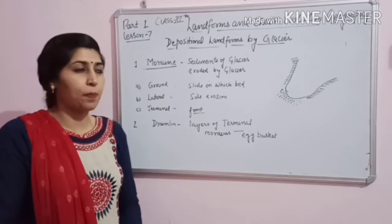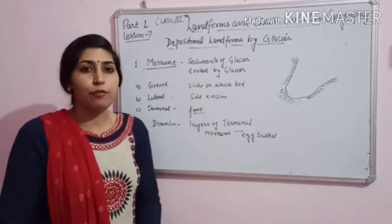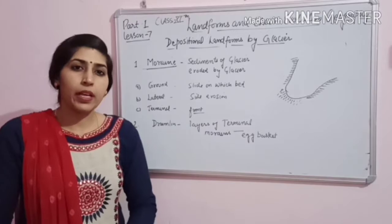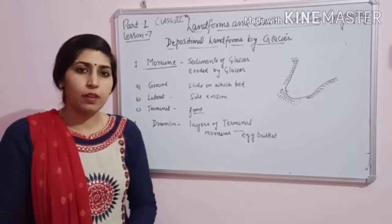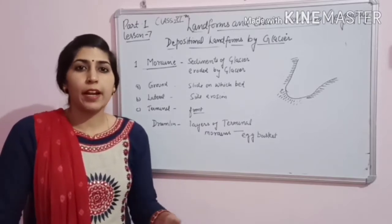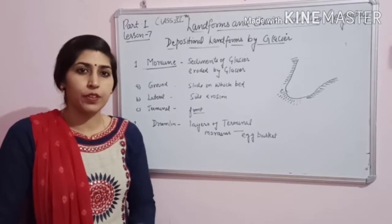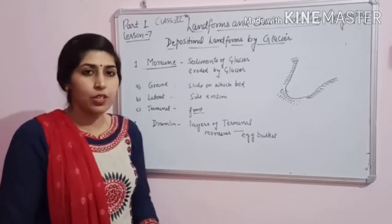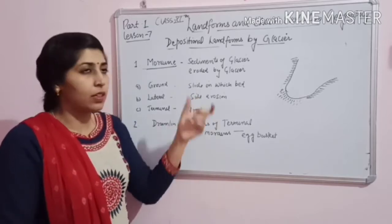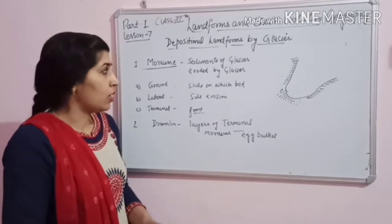Let's continue our previous topic, that is the landforms made by the glacier. We already, in this chapter, read the erosional and depositional activity of rivers and glaciers, and today we will read the depositional activity of glaciers.